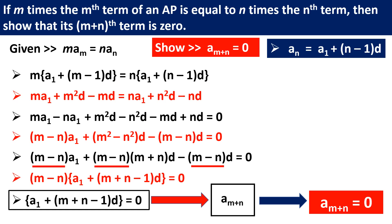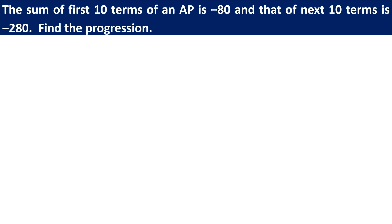The next question is also asked many times in exams: the sum of the first 10 terms of an AP is −80 and that of the next 10 terms is −280; find the progression. A common mistake students make here is treating the next 10 terms as the sum of 20 terms together. But the question says sum of the first 10 terms and sum of the next 10 terms separately — it is not the total 20 terms combined.